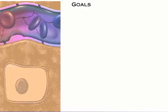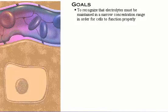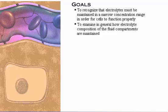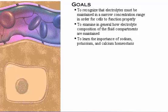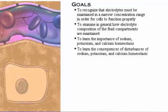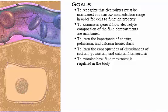Your goals for learning are to recognize that electrolytes must be maintained in a narrow concentration range in order for cells to function properly, to examine in general how the electrolyte composition of the fluid compartments are maintained, to learn the importance of sodium, potassium, and calcium homeostasis, to learn the consequences of disturbances of sodium, potassium, and calcium homeostasis, and to examine how fluid movement is regulated in the body.